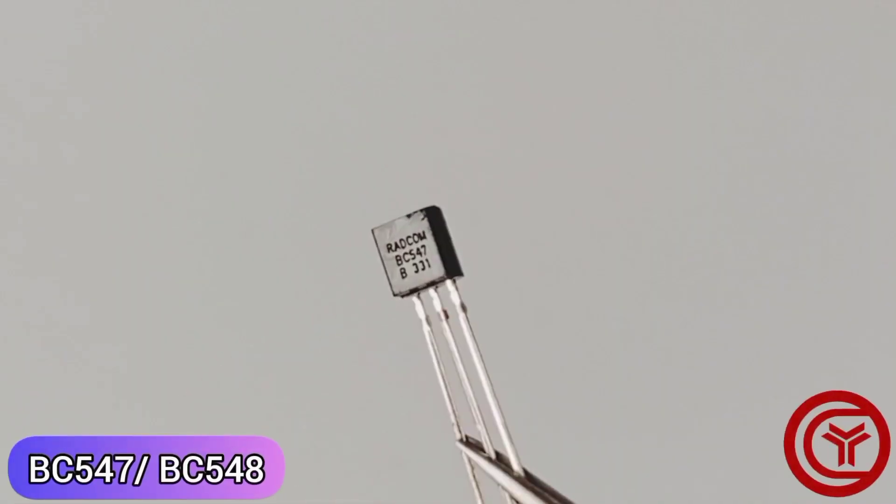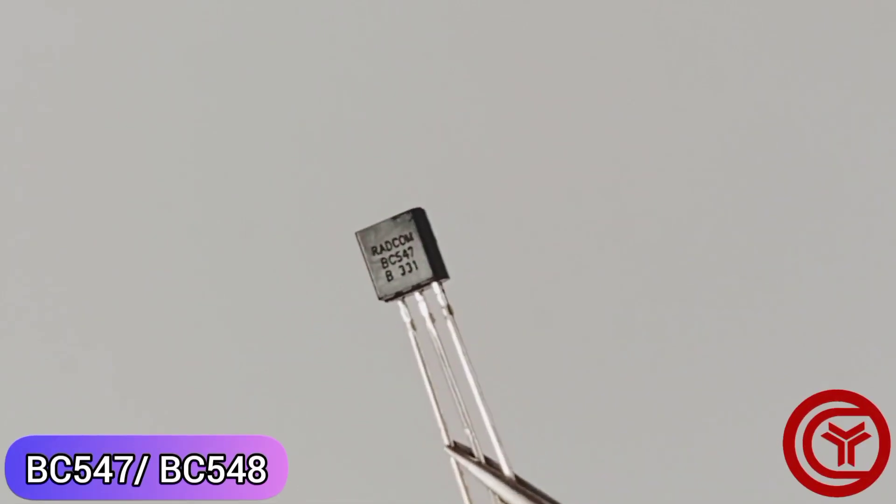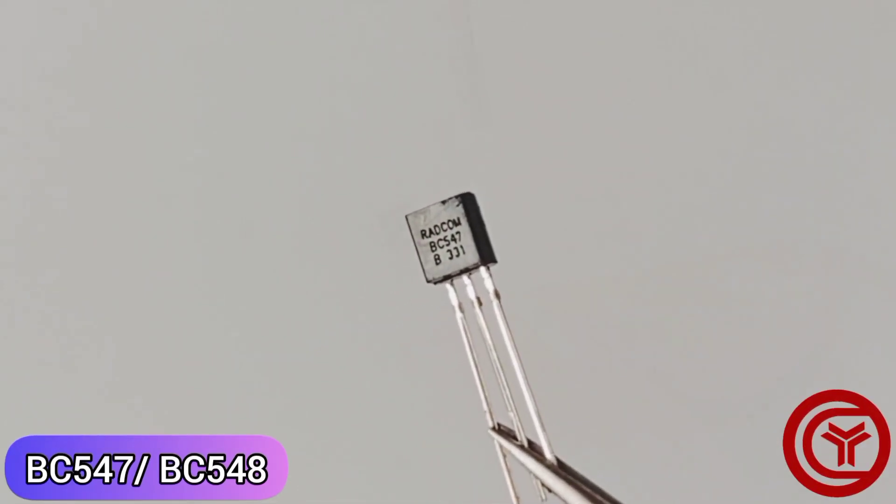Guys, today we will make a 24V Battery Full Charge Indicator Circuit. For this we need a BC547 or BC548 Transistor.